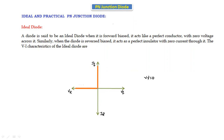These are the reverse bias characteristics. In the reverse bias characteristics, there is almost no reverse current — it is zero. The diode starts conducting from zero position only, that's why in the ideal diode the cut-in voltage is equal to zero.